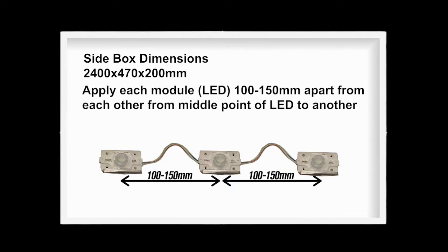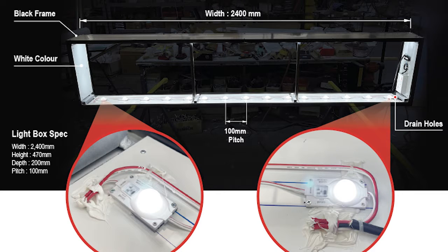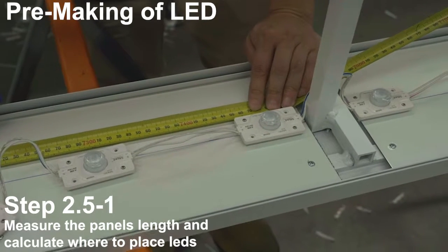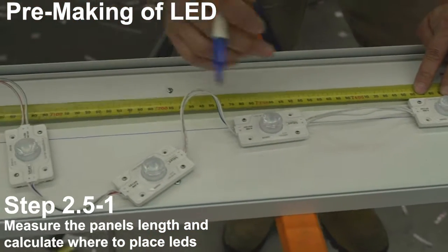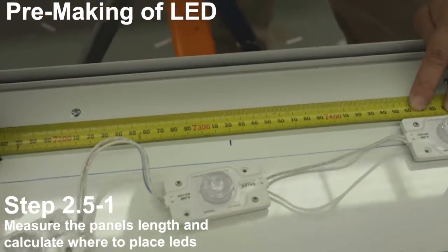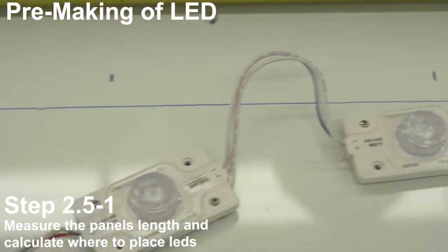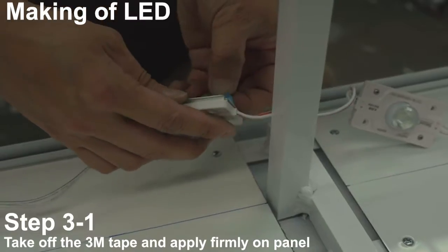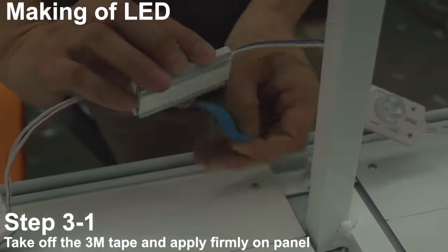Apply each module LED 100 to 150mm apart from each other, measuring from the middle point of one LED to another. Measure the panel's length and calculate where to place LEDs. Take off the 3 meter tape and apply firmly on the panel.